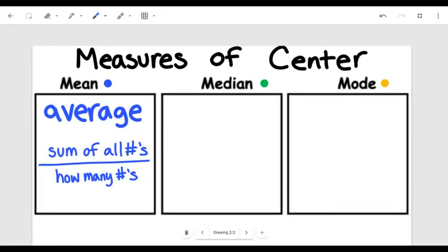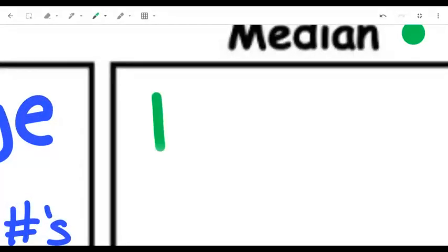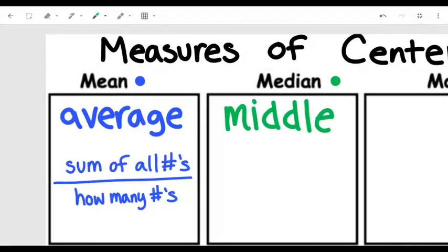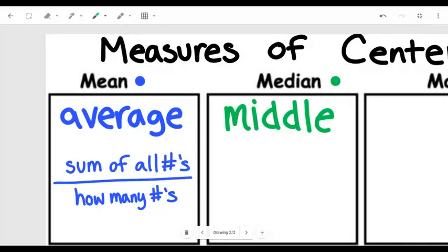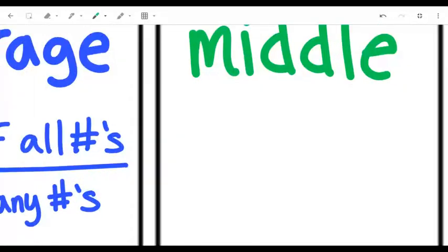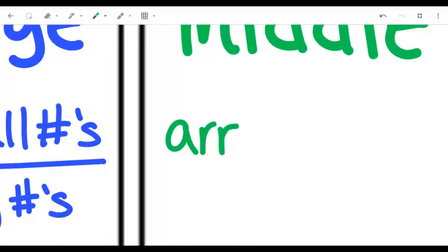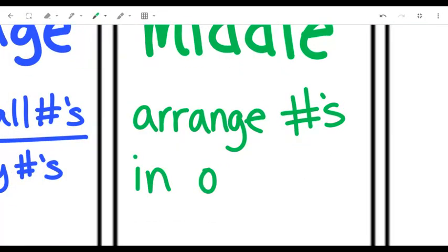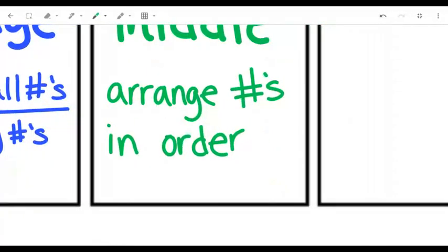Now, the median is a little different. The median, while it's still a measure of center, the median is going to be the middle number. Think of this like when you're driving down a hard road. You guys know what that strip of grass in between the two different directions are? It's called the median. The way you find the median is you have to arrange all numbers in order and then find the middle.